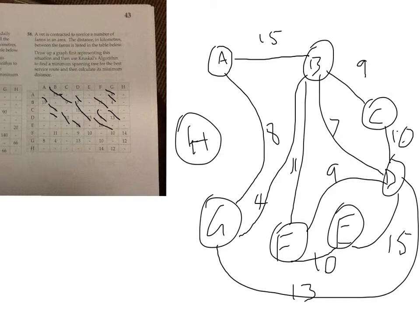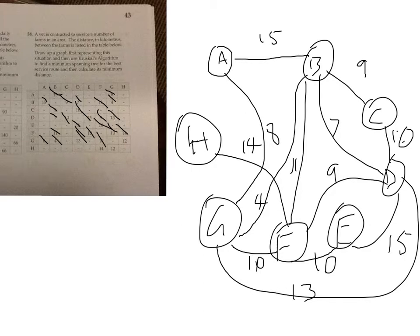E to F — we don't have that one — is 10. F to G is 10, and F to H which is 14. Then G to H which is 12. H has got two edges out of it already, so we don't need those. That completes the network.